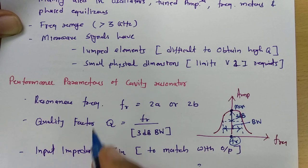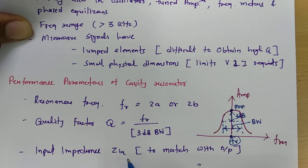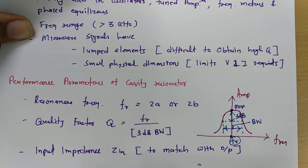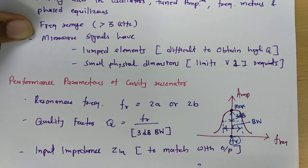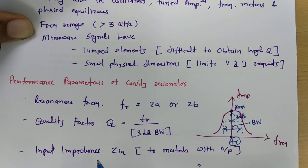The third performance parameter is input impedance. We need to understand the input impedance of a cavity resonator because when using it in a circuit, we must match it with the output circuit. Knowing the input impedance allows proper impedance matching so the resonator can be effectively used in a circuit.